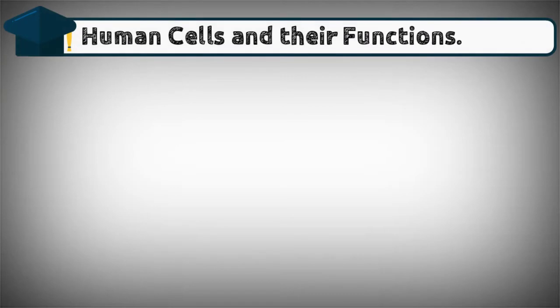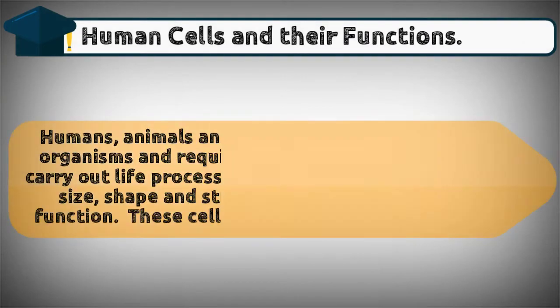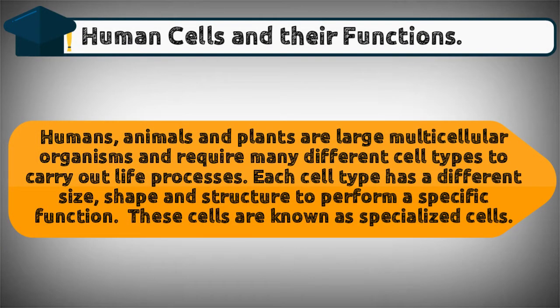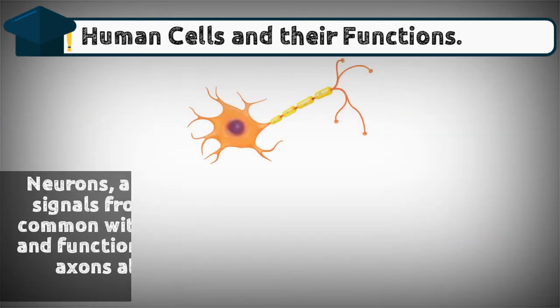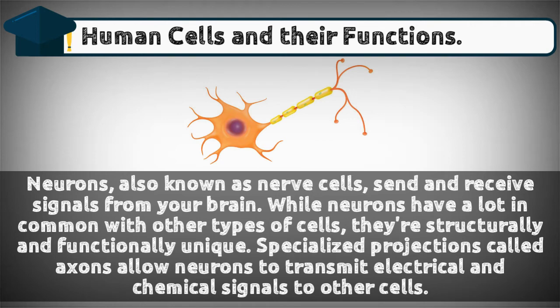Humans, animals, and plants are large multicellular organisms and require many different cell types to carry out life processes. Each cell type has a different size, shape, and structure to perform a specific function. These cells are known as specialized cells.